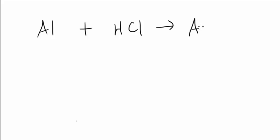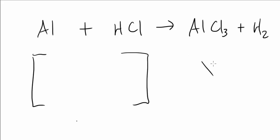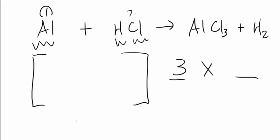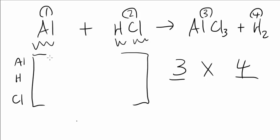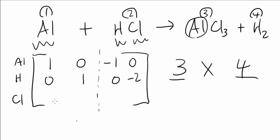Now let's do something harder. We have aluminum (Al) plus HCl producing AlCl3 plus H2. How many elements do you have? Three: aluminum, hydrogen, and chlorine. How many terms? Four. So you make a 3 by 4 matrix. Let the top row be aluminum, the next row be hydrogen, and the next row be chlorine. For aluminum: 1, 0, negative 1, 0. For hydrogen: 0, 1, 0, negative 2. For chlorine: 0, 1, negative 3, 0. Plug this into the matrix.